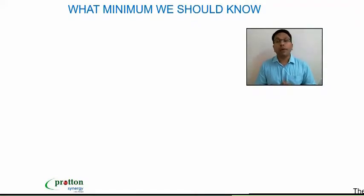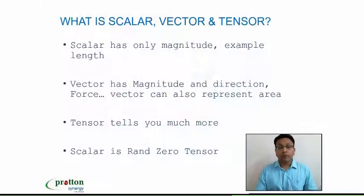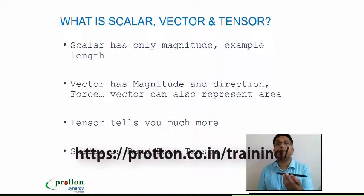Now, what minimum we should know? We have to go in a little bit depth. You should know what do you mean by scalar, vector, tensor. If you want to become a real good stress engineer, scalar is something which has only magnitude, no directions. Example: if this is say 10 centimeter long, I can say 10 centimeter from here to here or here to here.